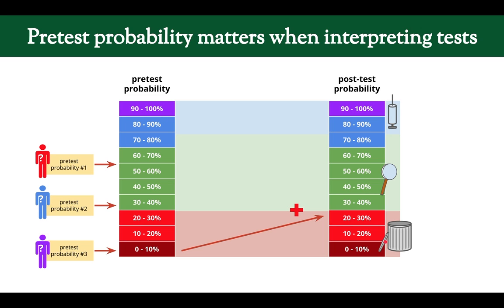If a patient has low likelihood of disease and falls below your testing threshold, you don't want to order a test. For the second patient at 33%, the positive test raised it to about 57%, but we stayed in the 'I don't know — still need to test' category. For example, a D-dimer in a patient with medium suspicion for a pulmonary embolism doesn't help — you'd want a different test with better testing characteristics.